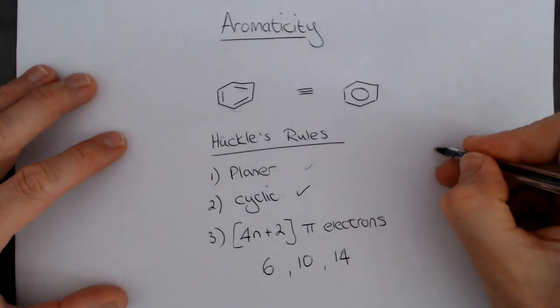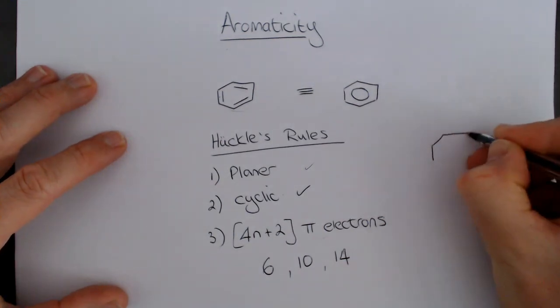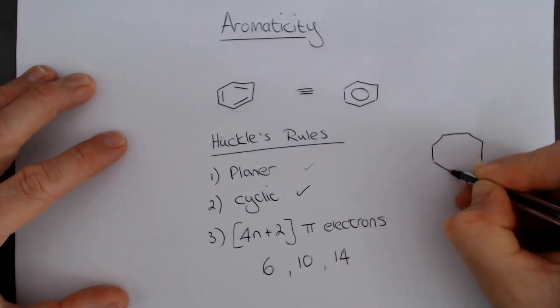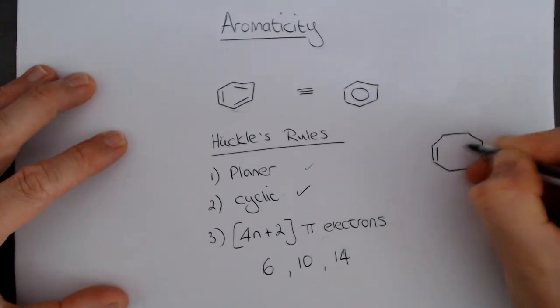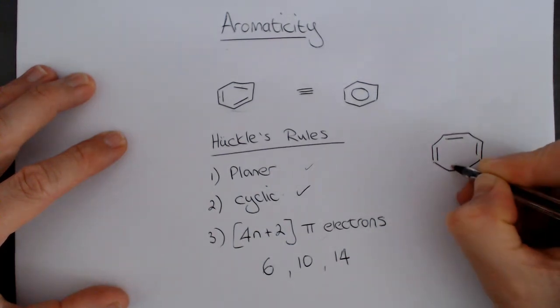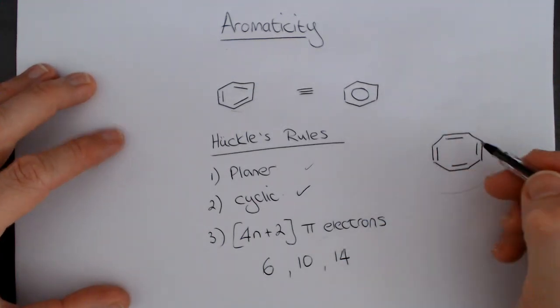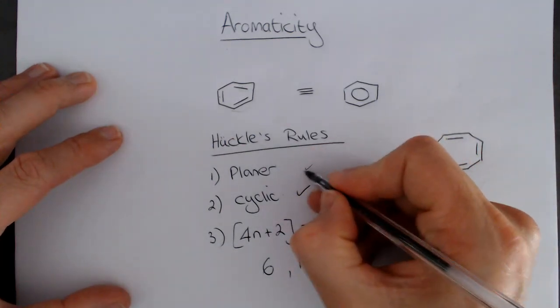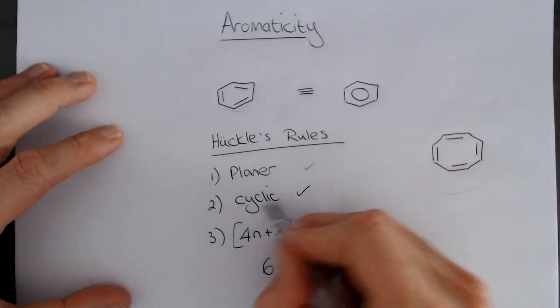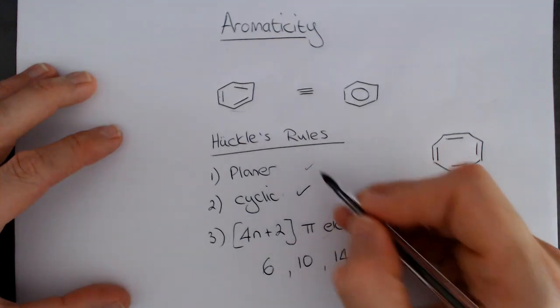So, let's look at the first molecule and decide whether or not it's aromatic. So, this is an example. This one is a cyclooctatetraene. It is planar. It is cyclic. All of those seem to satisfy the rules.